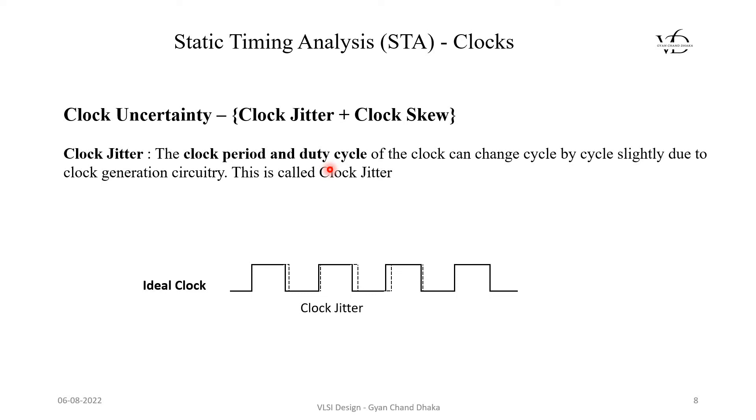Let's first see clock jitter. Clock jitter is the variation in the time period or duty cycle of a clock signal. Due to the clock generation circuitry, there might be some variation in the clock period and duty cycle.